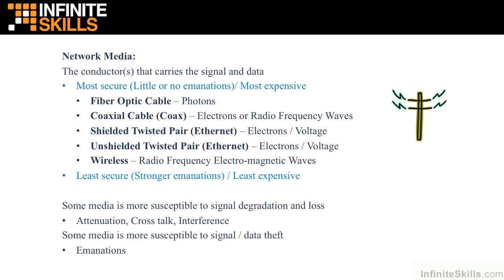A relatively new entry into computer network media is wireless networks. It uses radiofrequency electromagnetic waves propagated into the air, where the air is actually the media itself. This makes wireless the least secure media, because it is nothing but emanations in the air — a bad guy with a receiver can listen to everything propagated across your network, which is why we must take extremely high measures to secure wireless networks. Because no cables are needed, it is also the least expensive network media to implement.